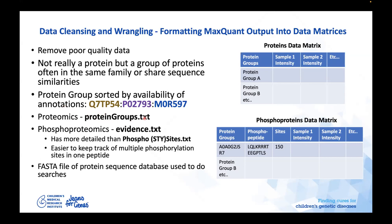I usually use the MaxQuant engine to analyze raw mass spectra. It gives me the protein groups file used for proteomics data, containing protein groups and the intensity of each protein across samples. For phosphoproteomics data, I use the evidence.txt matrix rather than the phospho STY sites file that most people use, because it has more detail and makes it easier to track multiple phosphorylation sites within one peptide.